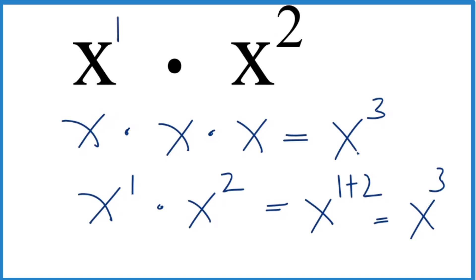And if there's nothing written, it's an exponent of one. This is Dr. B, multiplying x times x squared. The answer is x to the third. Thanks for watching.